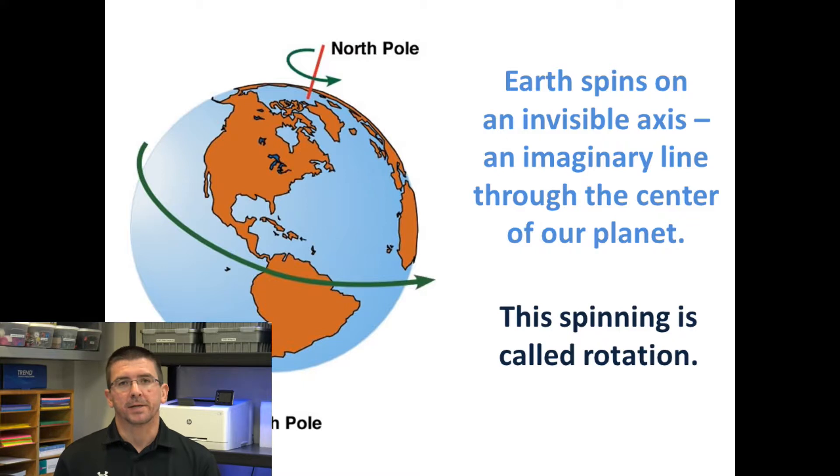As Earth sits in space, it's not sitting still. It's actually constantly spinning on an invisible line between the North and South Pole that we refer to as Earth's axis. This axis is basically just a fixed point around which Earth spins, and we call that spinning rotation.